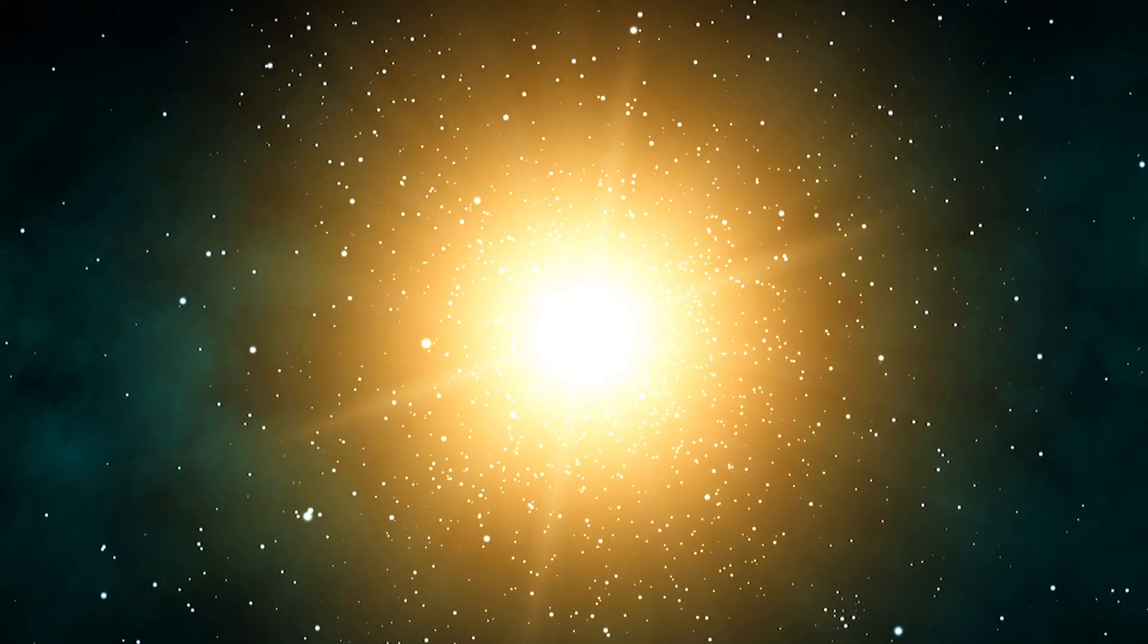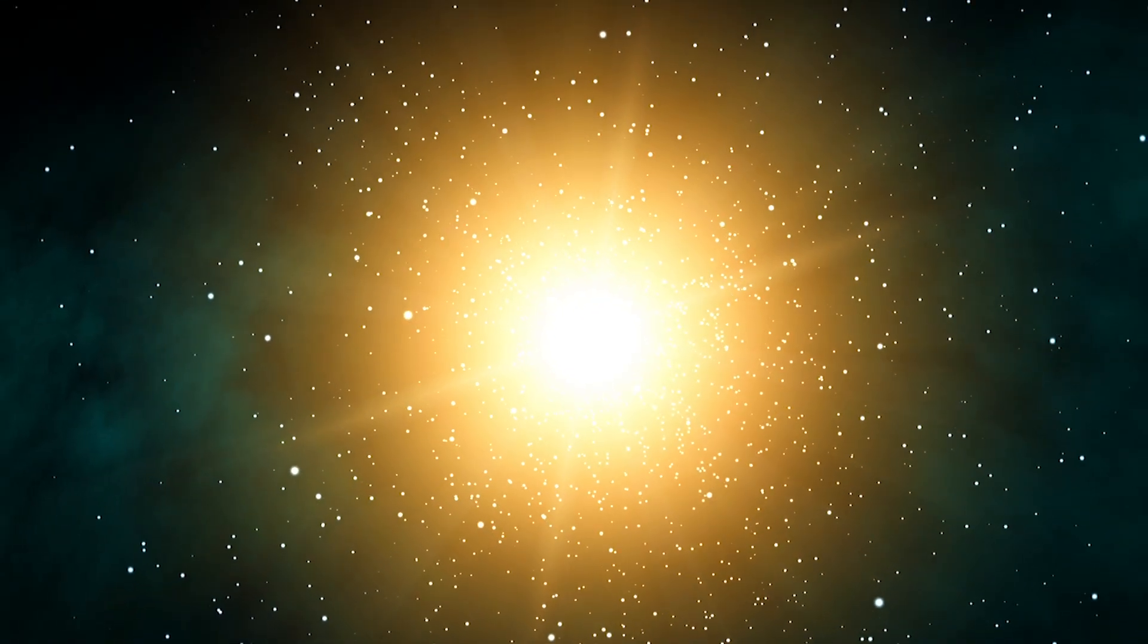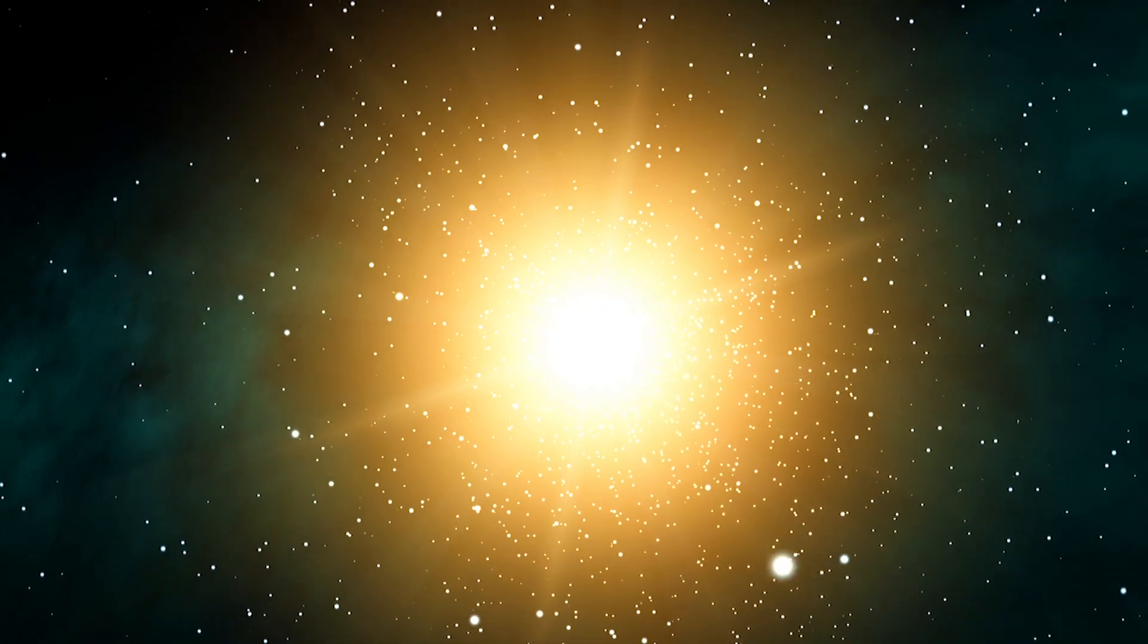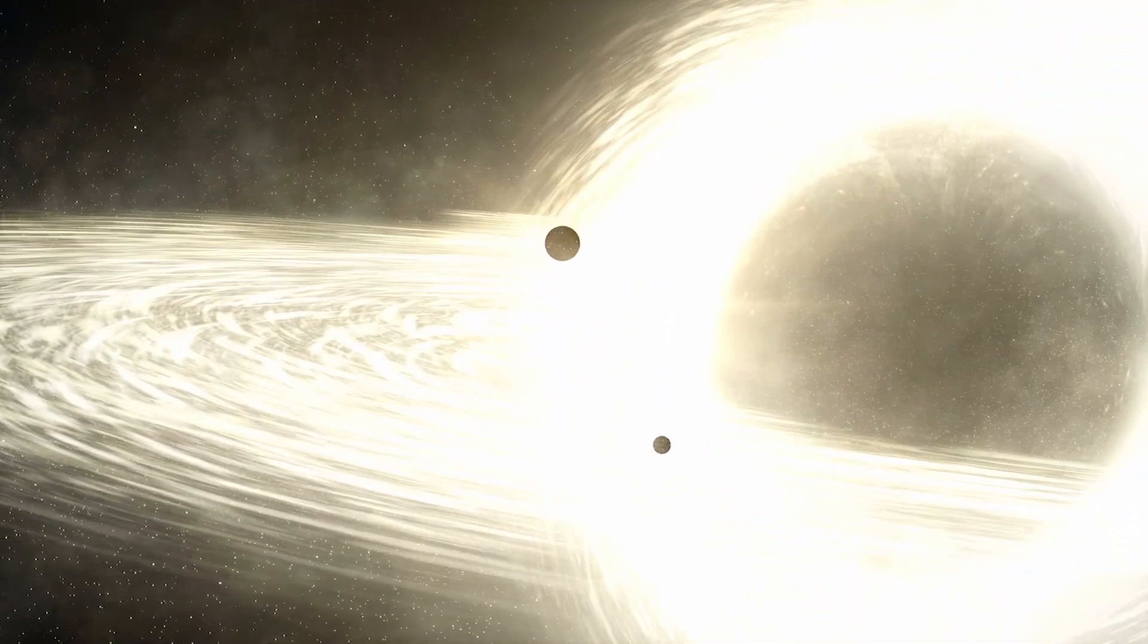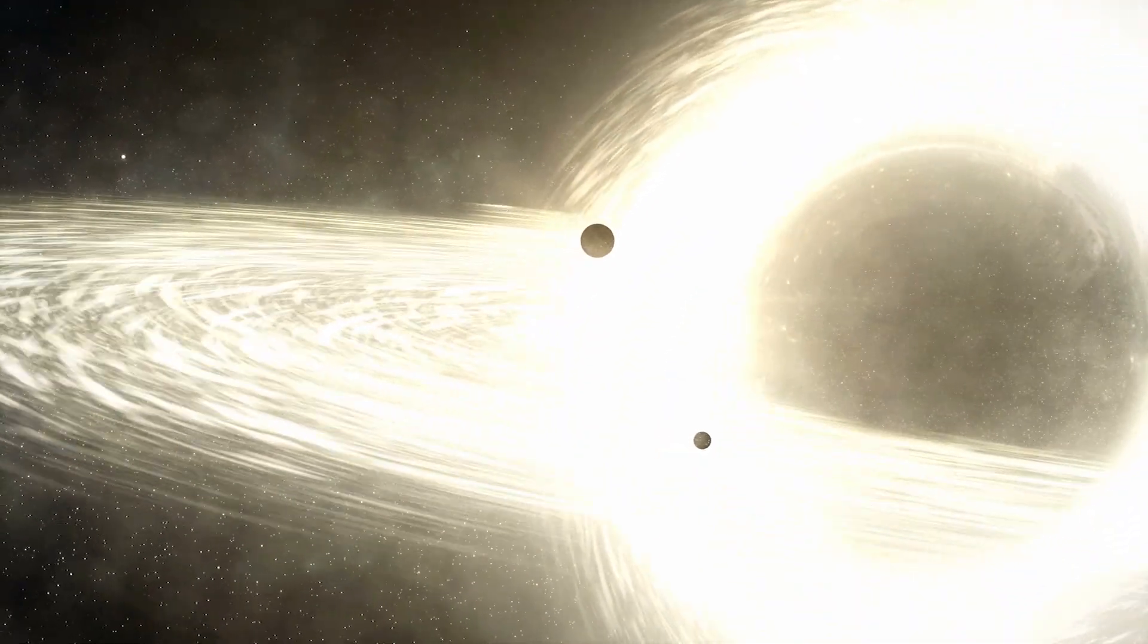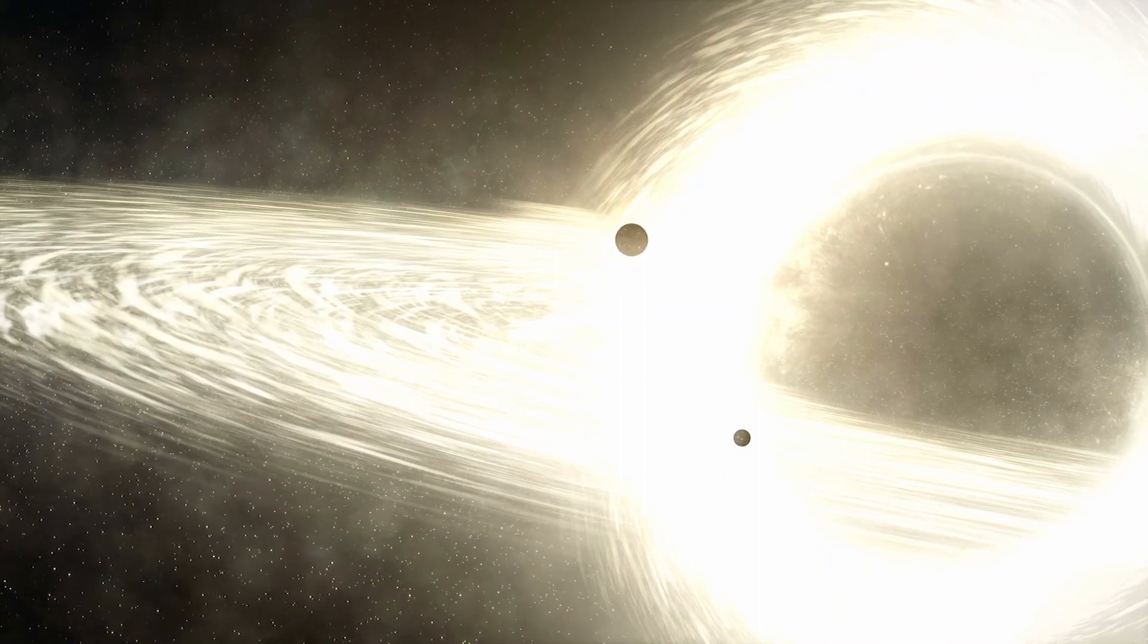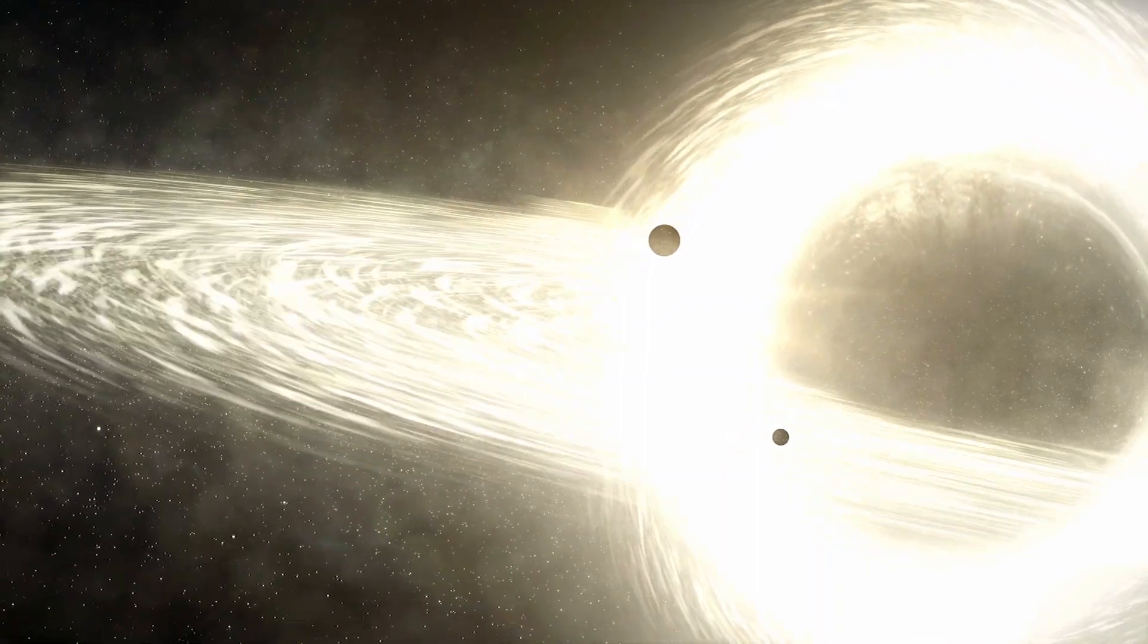Virtually all types of compact objects are significant sources of high energy emission because of the enormous gravitational fields they tend to generate. Gravitational fields can accelerate nearby particles to extreme velocities, which then emit gamma rays and x-rays.